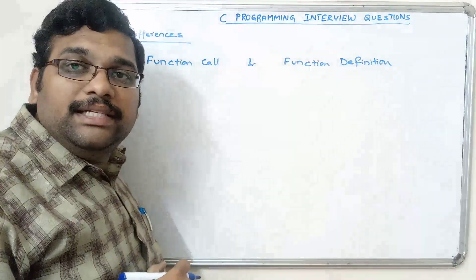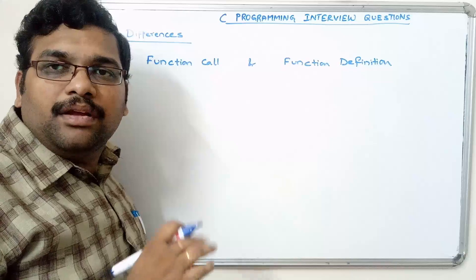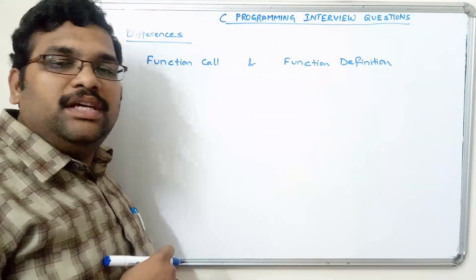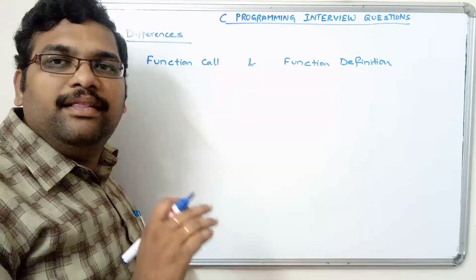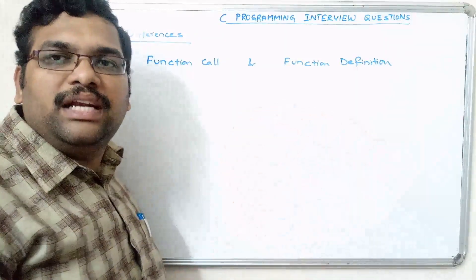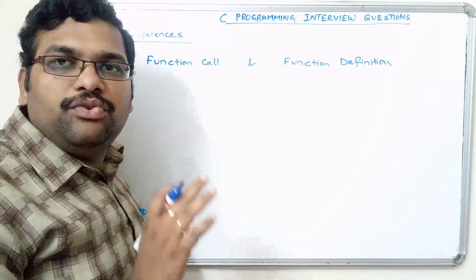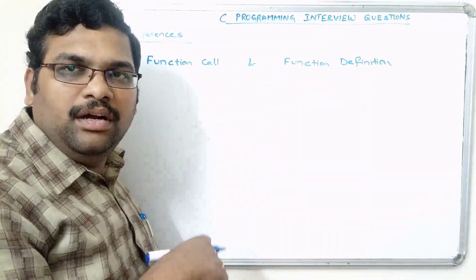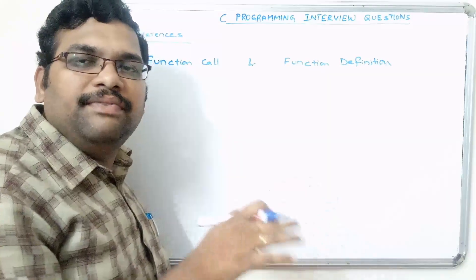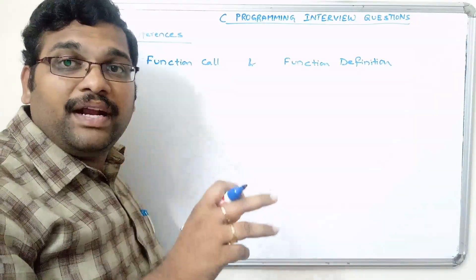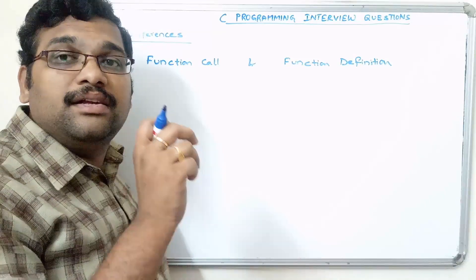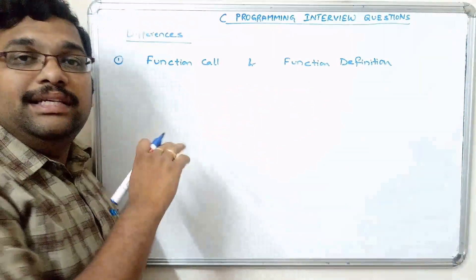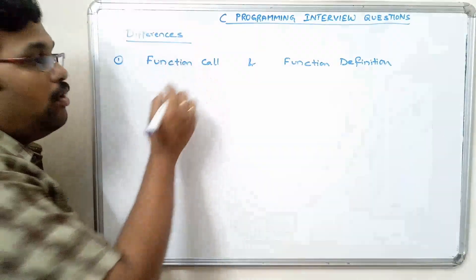As we know, execution starts from the main function. In the main function, we have to write the reference of the user-defined function. Unless you write this reference of the user-defined function in the main function, the user-defined function will not be executed. That reference — writing the reference of the user-defined function — is called the function call.